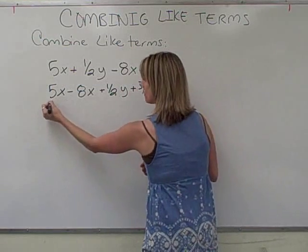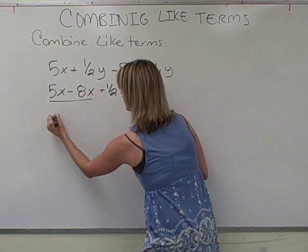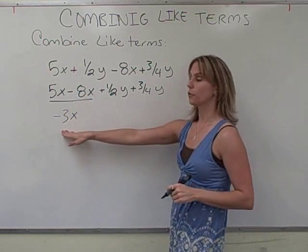Now what we're going to do is 5X minus 8X. Those are like terms. We're going to get negative 3X. Because 5 minus 8 is negative 3.